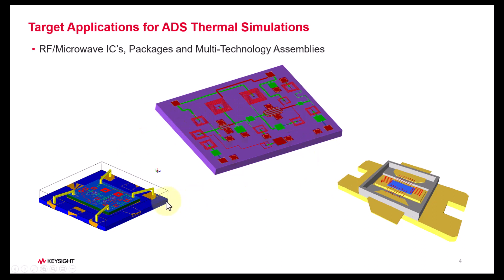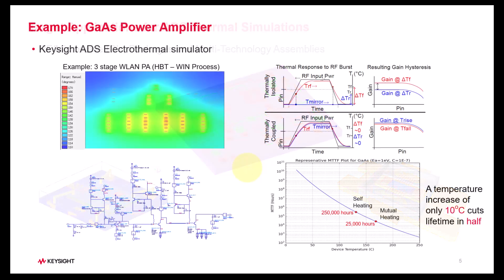As long as you have the design and its thermal technology files, you are able to perform full electrothermal closed-loop analysis natively inside ADS without having to rely on any third-party tools. Here is one example of a Gallium Arsenide Power Amplifier, which is analyzed by ADS Electrothermal Simulator. It is a three-stage power amplifier for WLAN application done with the WIN process of HPT.